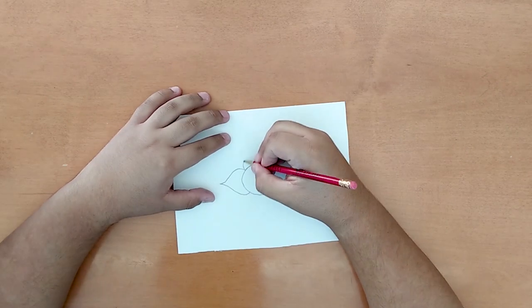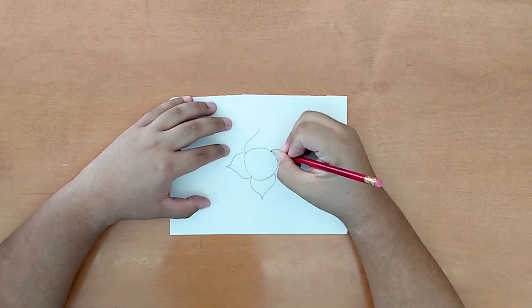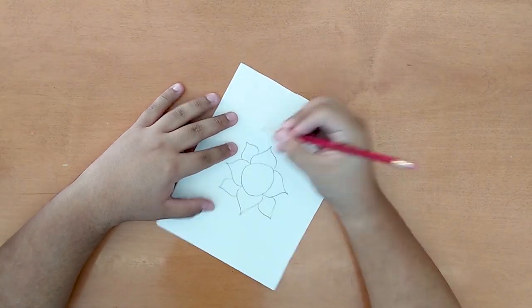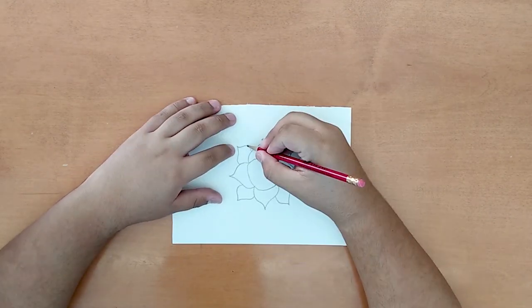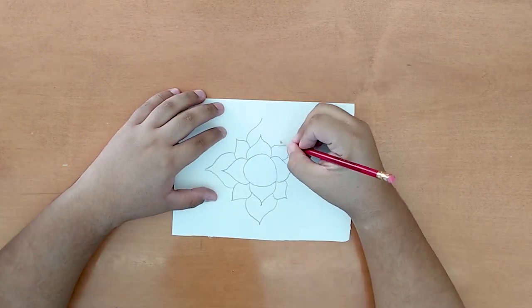Before we start making our salt crystal painting activity, sketch any image you want to follow along with. Any drawing that comes to mind is fine. There is no right or wrong ways to do this. Now, keep in mind, when sketching this part out, keep a wide enough gap so that it will be easy to trace with the glue.